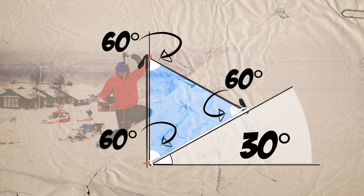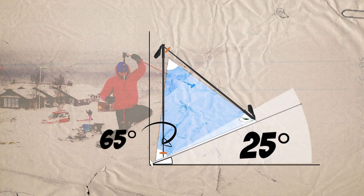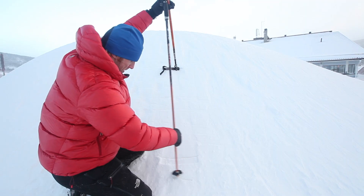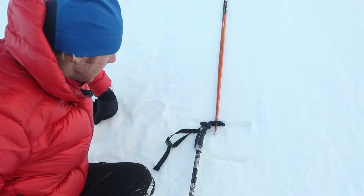They add up to 90, right? A 25 degree slope will be if the ski pole touches just inside of the mark, and anything outside will be greater than a 30 degree slope angle, meaning bigger risk.